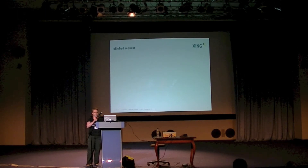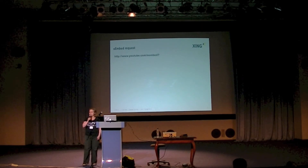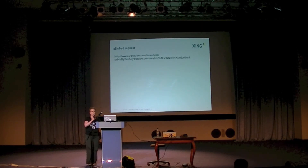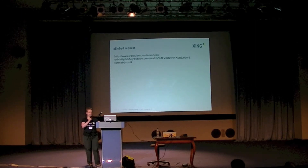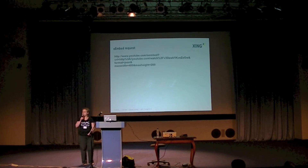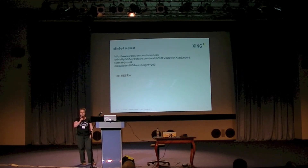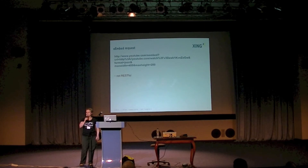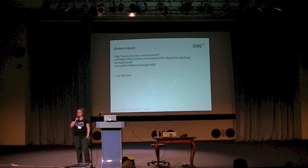How does an oEmbed request look like? Basically it's an HTTP request to the API endpoint of the media provider — in this example it's YouTube — and it contains the URL of the resource you want to embed (that is the video), the format you prefer (either JSON or XML), and some size limits in order to make sure that the response you receive is suitable for the space you have available on your site. This is not RESTful at all, which is also one of the main criticisms oEmbed receives. The oEmbed authors decided to go for this approach because they assume that the code changes you need to turn an existing web application into an oEmbed consumer are less deep compared to a truly RESTful approach.